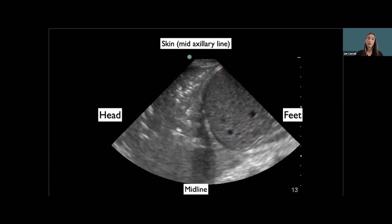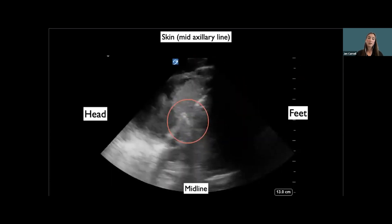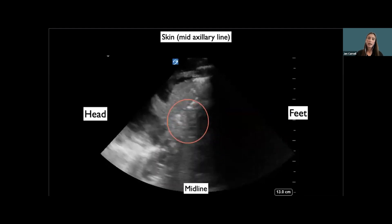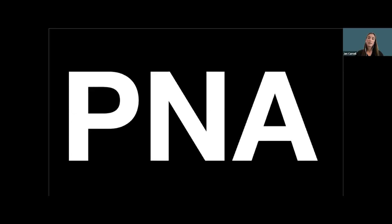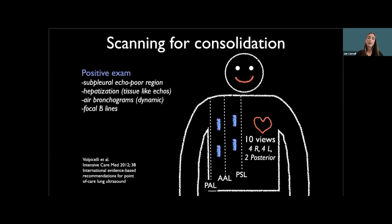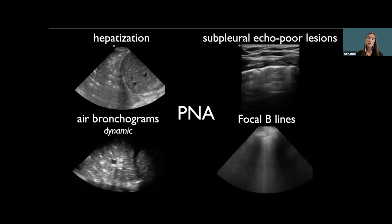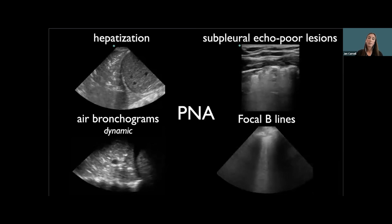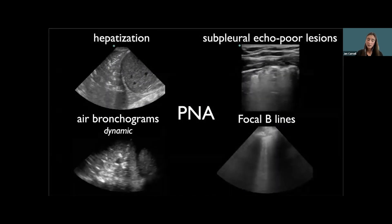This is hepatization of the lung — an abnormal finding most often seen in pneumonia. You might also see dynamic air bronchograms: bright white dots that are actually moving up and down. Dynamic air bronchograms are very specific for pneumonia. Scanning for pneumonia isn't easy since it's patchy and potentially focal — you've got to scan both anterior and posterior lung zones. But if you see hepatization, air bronchograms, focal B lines, or a lumpy, bumpy, irregular pleural line, those are all signs of pneumonia.